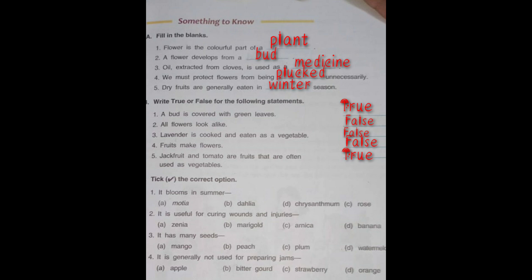Now we will move towards the tick the correct options. Number one: It blooms in summer. There are four options and we have to choose the flower that blooms in summer. The correct answer is motiya.